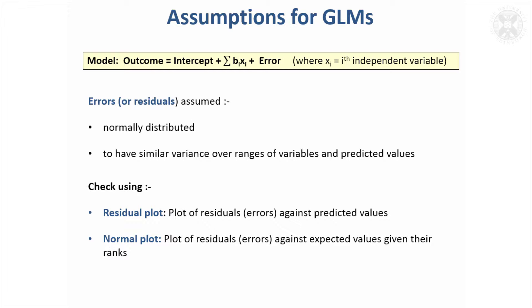I'll show one in a minute. There's also another type of plot called a normal plot, and that checks the normality a bit more closely. It's a plot of residuals against their expected values given their ranks — so the values you would expect them to be if they had a normal distribution.